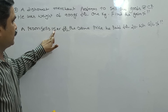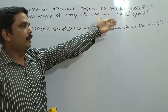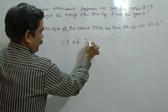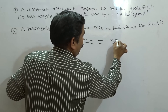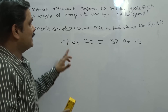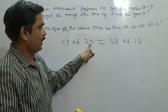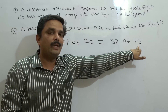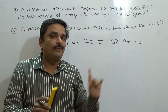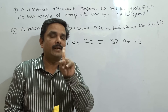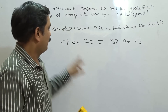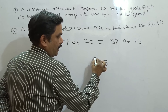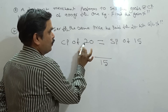Now the second question: a person sells 15 articles for the same price he paid for 20. What is the gain or loss percentage? Simply I can say cost price of 20 is equal to selling price of 15. He is recovering cost price of 20 by selling only 15 articles, so certainly he is at a profit. On selling every 15 articles he is gaining a profit equal to cost price of 5, since 20 minus 15 equals 5.